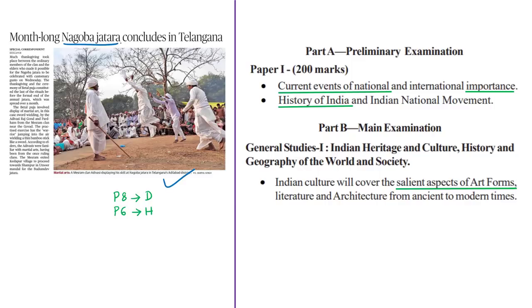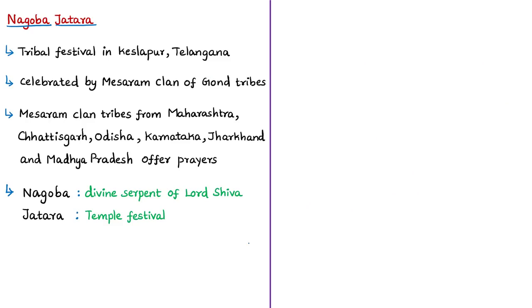This news article is about the Nagoba Jatra festival celebrated by tribal communities. It is usually held in Kesulapur village in Adilabad district of Telangana and is said to be one of the biggest tribal carnivals in Telangana, celebrated for a period of around one month. It is celebrated by the Masaram clan of the Gond tribal community, whose members are found in the states of Maharashtra, Chhattisgarh, Odisha, Karnataka, Jharkhand, and Madhya Pradesh.